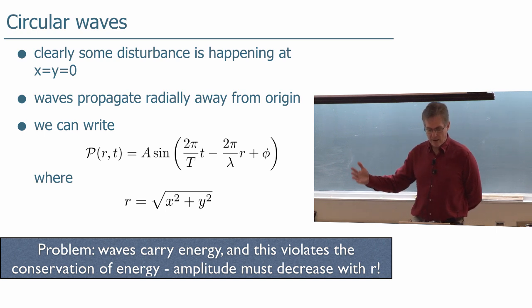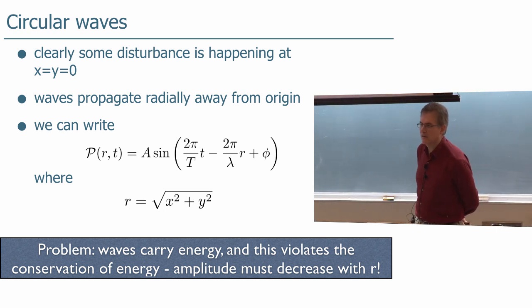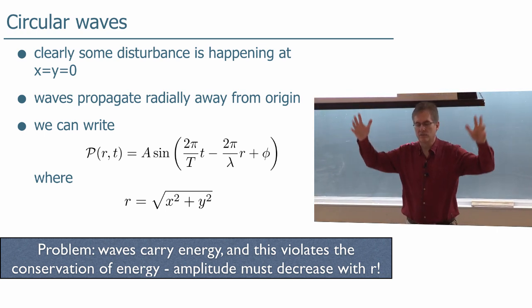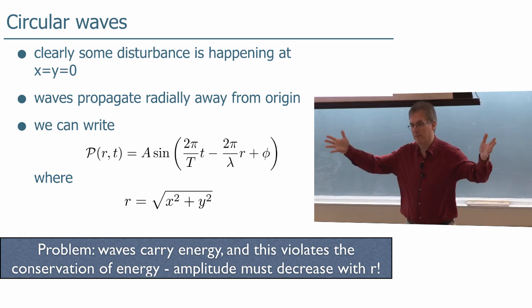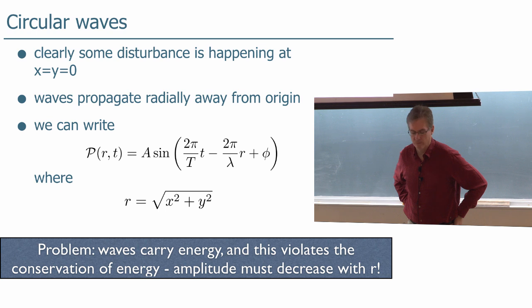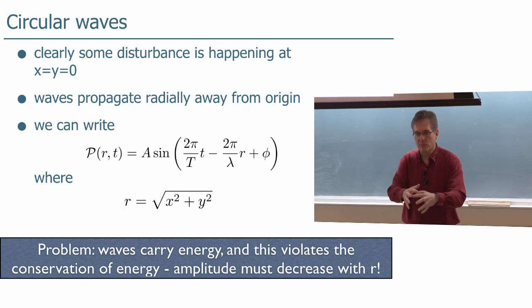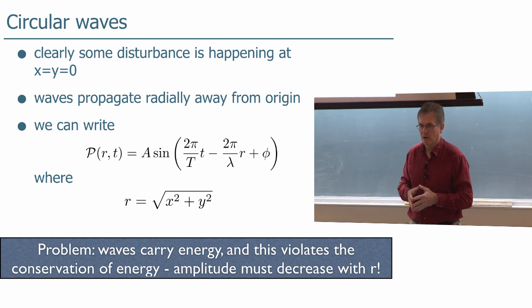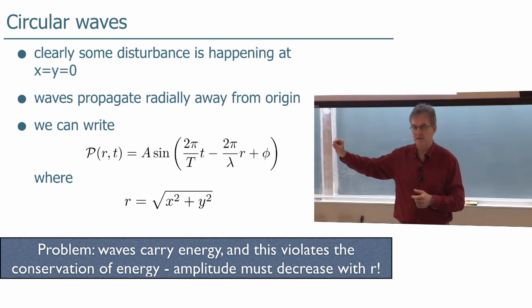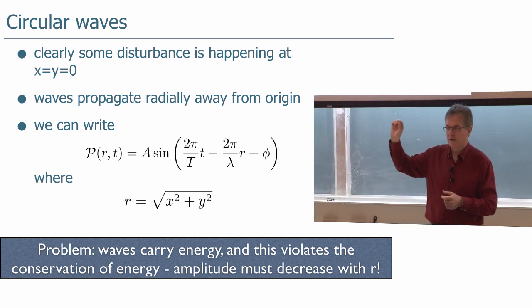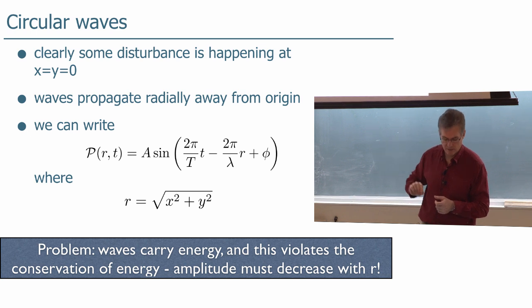How would we write down the equation of a wave that's propagating out in circles like that? Well, you have some disturbance happening at the origin, x equals y equals zero, and the waves are propagating radially away from the origin. I'll just change my wave equation from being p of x and t to being p of r, the radius and time.